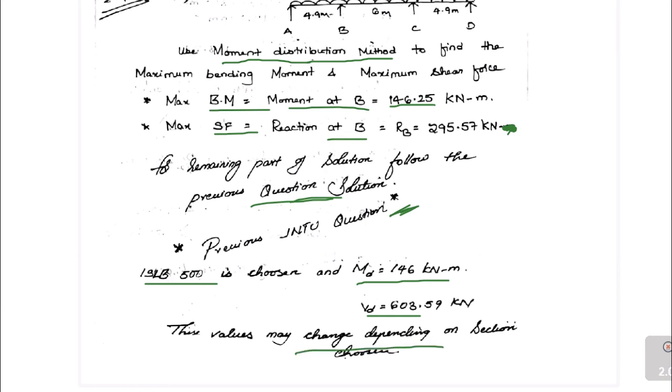Of course these values may change if you take some other section. So this section is chosen based on ZP value. Sometimes there is a chance for going for a higher section. So someone may select ISLB 600 or 550. Higher section, no problem. You can go for any higher section but that is not that economical.